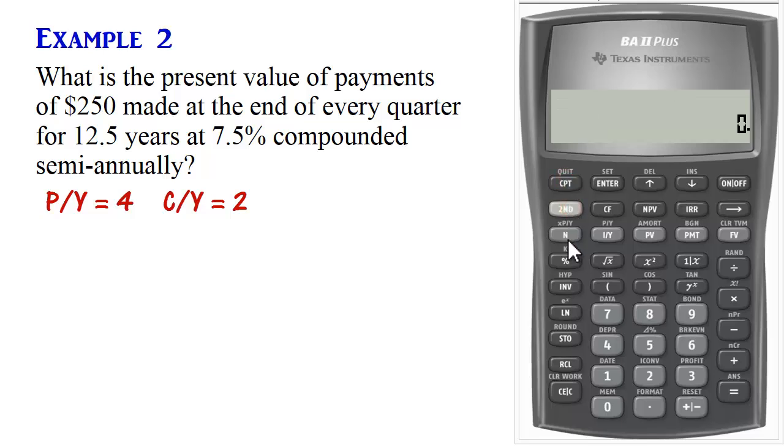Next, we enter N. In this case, we have quarterly payments made for 12.5 years. So we have 12.5 times 4, so that is 50 payments altogether. And then we'll press N. The interest rate is 7.5%, 7.5 I/Y.